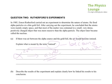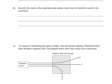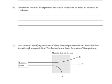Part B. Describe the results of the experiment and explain clearly how he linked his results to his conclusion. We need a table here of results and conclusion, and the link between the two. This should present no problems, and there are three.